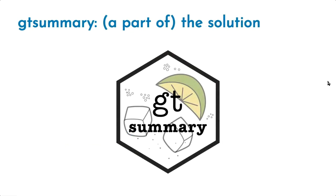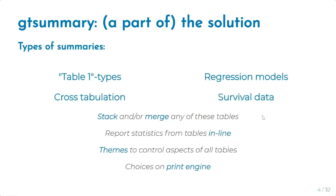The goal of GT summary was: one, to make the syntax incredibly simple; two, to make the output look exactly like it's ready for publication with no tweaking necessary; and three, to make it very easy to customize your output.